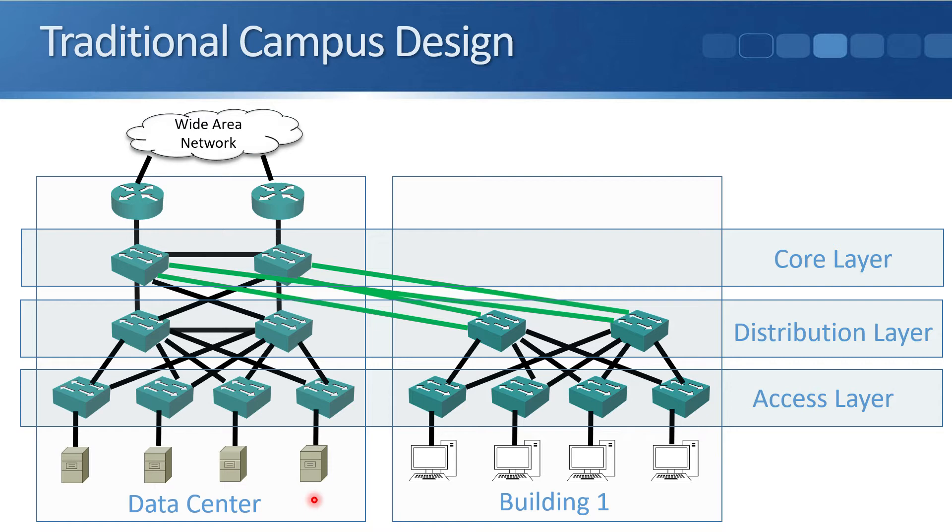You also might have an application, for example, which has a web-based front end on a server that's talking to a back-end database on another server as well. So again that traffic, rather than going north and southbound through the different layers, would be going east-westbound between the different servers themselves. And while the traditional campus design works well where most of your traffic is north and southbound, it's not so good where a lot of your traffic is east and westbound.